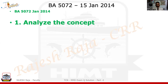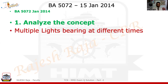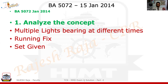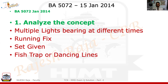Let us quickly analyze this concept. To be honest, I've not made a video of this particular concept. As I said in the last video, barring a few of them, I've made most of the concepts and this one is actually missing. But still, I'm going to show you how to solve the problem, and later on I'll make the concept also. If you realize, he has given you multiple lights and the bearings are at different times, which tells me that it is a running fix. The set is given, meaning the direction of the current is given. It is a fish trap, also called dancing lines.